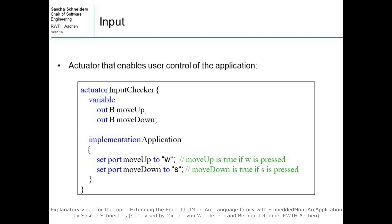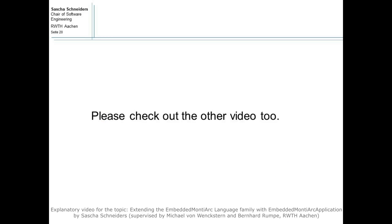As the creation of standalone applications utilized by a user usually requires interaction between the user and the application, a way of defining these interaction points and triggering changes in the software is required. To fulfill these requirements, the Embedded MontiArc Application language allows triggering actions in a model by setting boolean ports to true if the specified input key is pressed, and to false if it is not pressed. You can watch detailed examples for the usage of the Embedded MontiArc Application language in the video of my project partner, which is linked in the description.